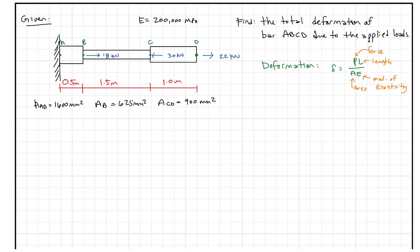In this question, we're going to take a look at a one-dimensional system where we have three bars with three different loads, and we want to find the total deformation of that bar due to the applied loads. The deformation of any individual bar is delta equals PL over AE, where P is the force, L is the length, A is the area, and E is the modulus of elasticity.